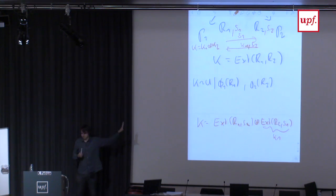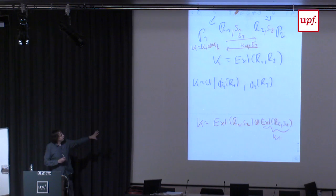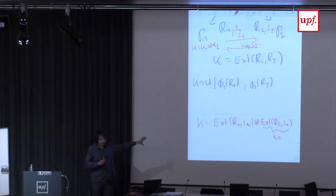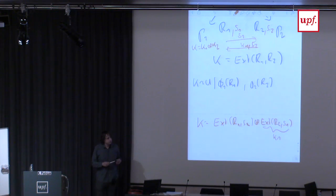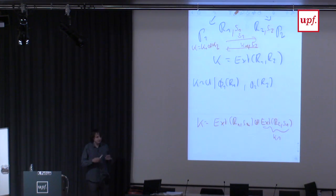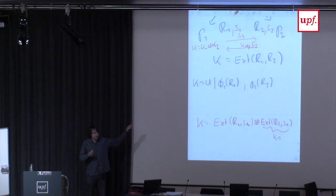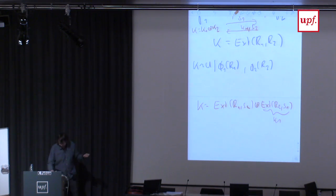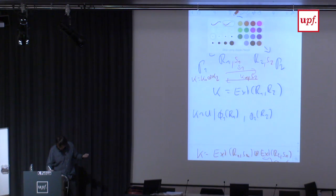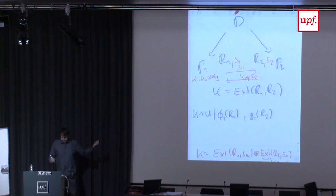There is one big problem. The key K is uniform even if the adversary gets leakage phi1 of R1 and phi2 of R2 — but only if these leakage functions are independent of each other. Here's an attack: the adversary infects P1's computer and leaks the short seed S1. Once he knows S1, he infects P2's computer and his leakage function phi2 depends on what he learned from P1 — he extracts from R2 using S1. Then he goes back to P1 and learns the extracted value from R1 using S2, reconstructing the entire secret.